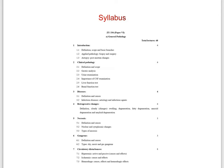Chapter eight is inflammation, covering definition and causes, cardinals of inflammation, vascular phenomenon, cellular responses, and acute and chronic inflammation. Chapter nine is repair: the process of repair, types — that is by regeneration, by connective tissue proliferation — and healing by primary and secondary methods.